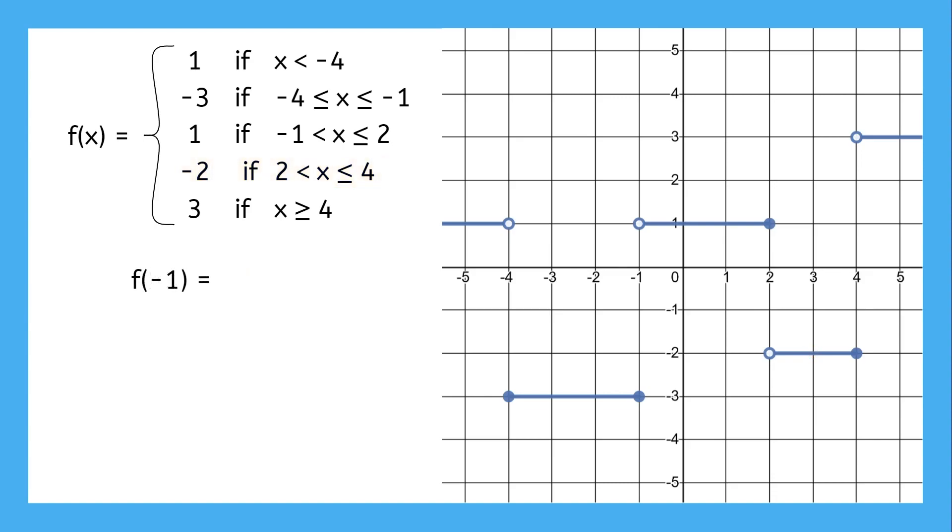All right. So what if the input is negative 1? The function has two intervals with negative 1, so which one do we use? Remember that the different symbols here mean different things. The middle piece is only when the input is greater than negative 1, not equal to it. The other piece of the function, however, uses inputs less than or equal to negative 1, meaning negative 1 would fall into this category, so the output is negative 3.